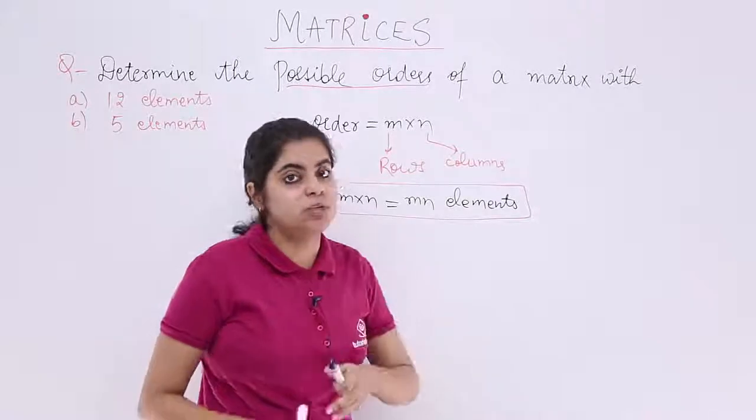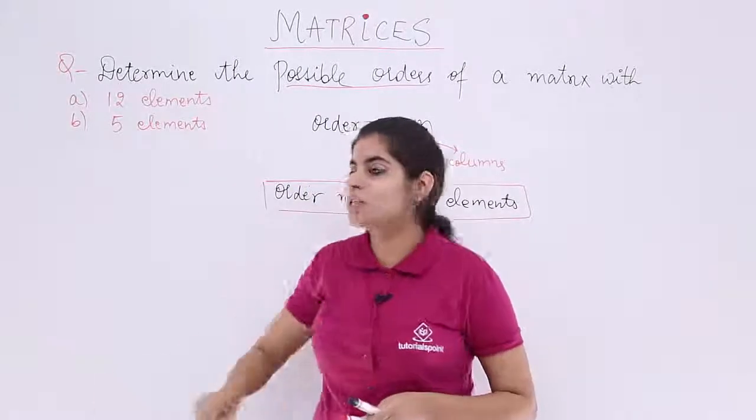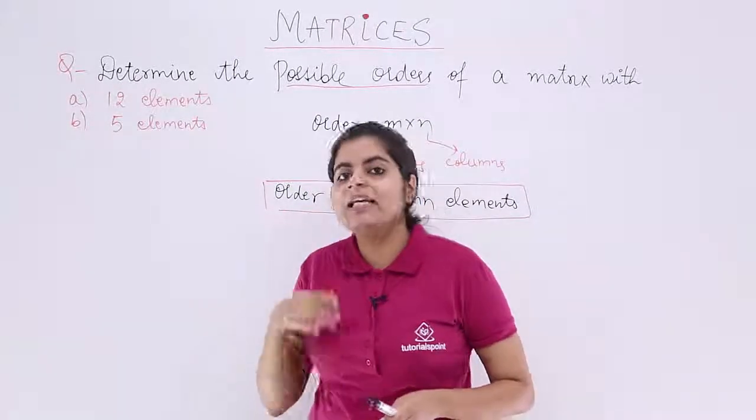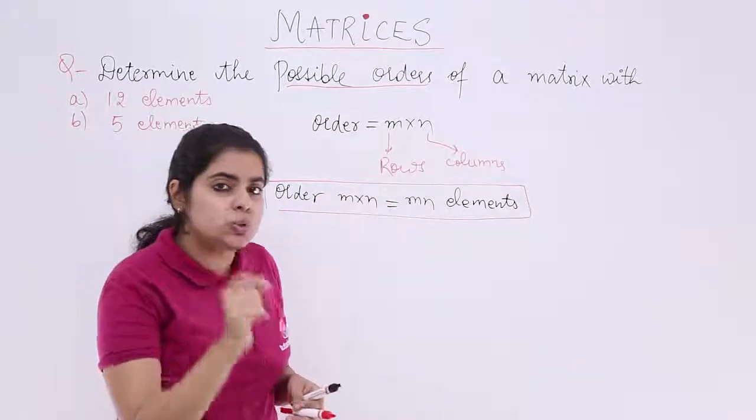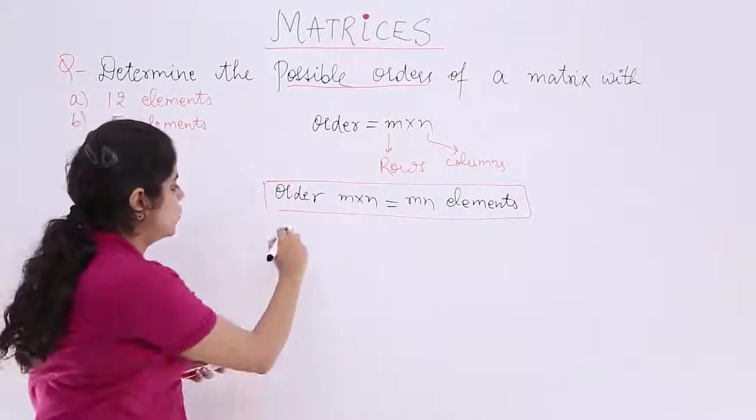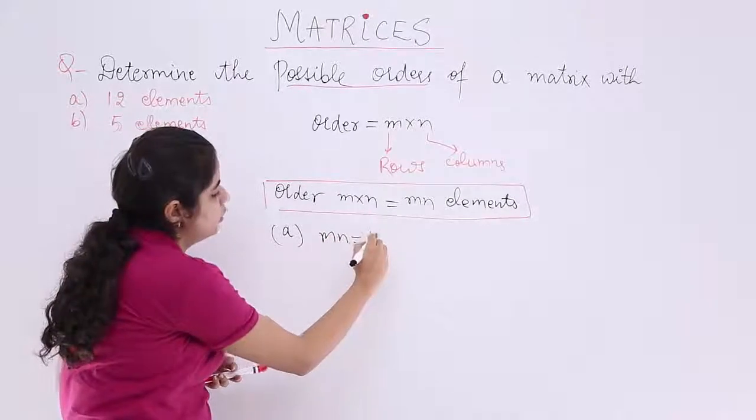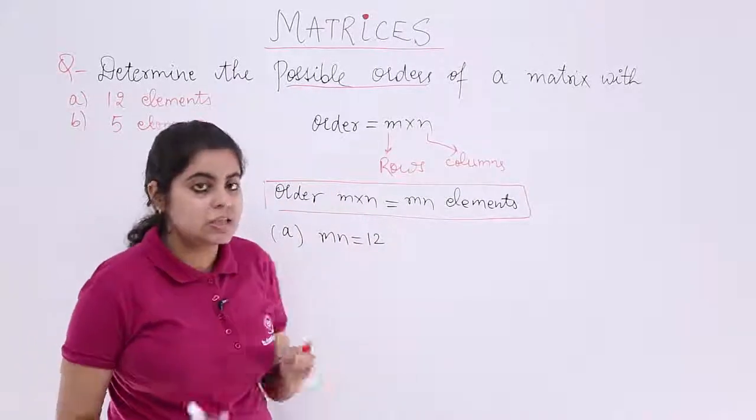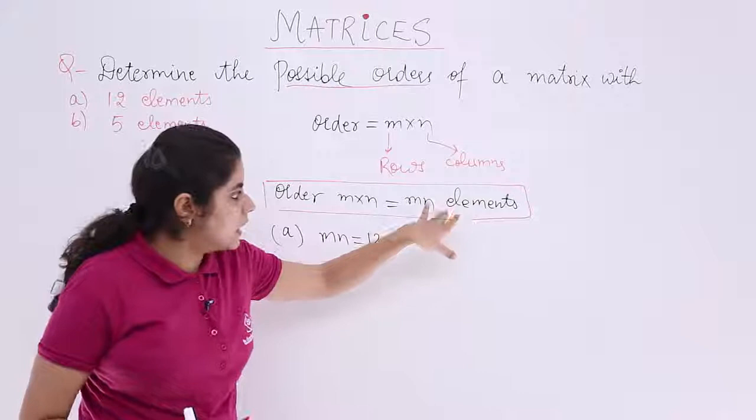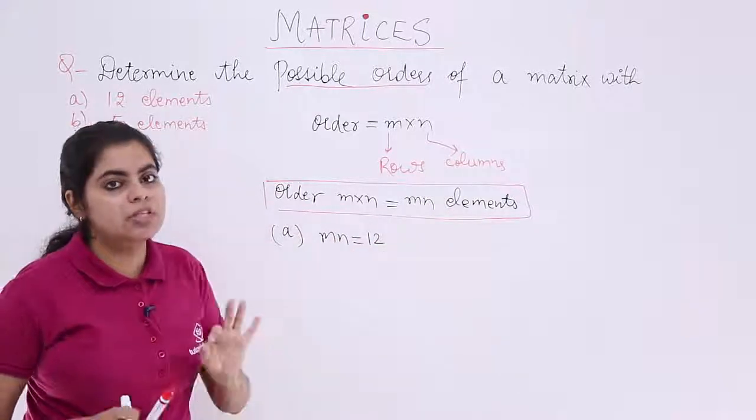Now, let's move back to the question. The question has two parts. First part is 12 elements, second is 5. We will see it later. 12 elements mean what? I have the value of mn equal to 12. Elements are mn which is 12.